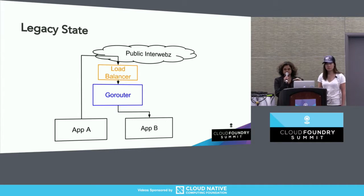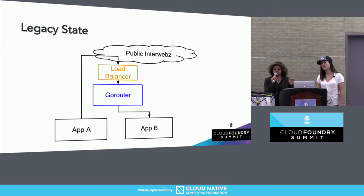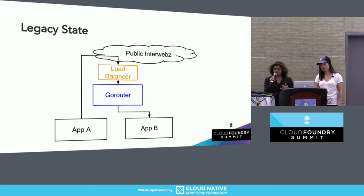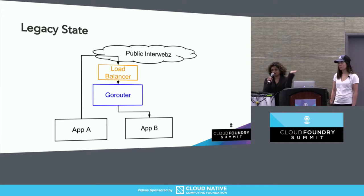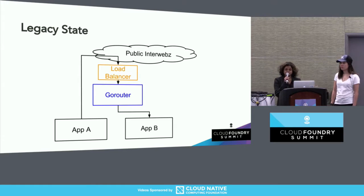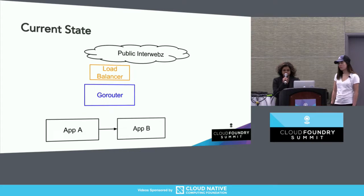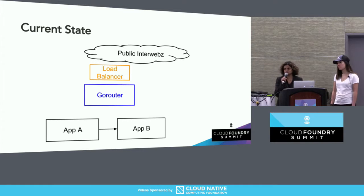Just to set the foundation for what we're going to be talking about: typical Cloud Foundry networking used to have every single app go through the Go router if it wanted to talk to another app. This is not only inefficient — you have this additional hop all the way out of your PCF foundation to your load balancer — but it also poses a problem in terms of applying security policies in case you wanted to protect App B from other apps trying to access it.